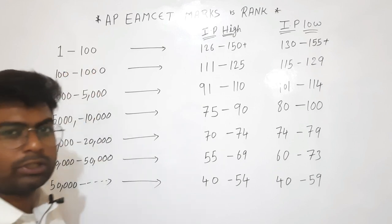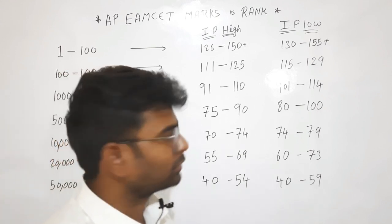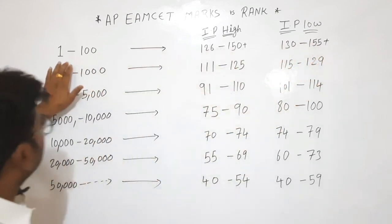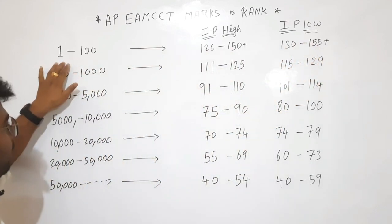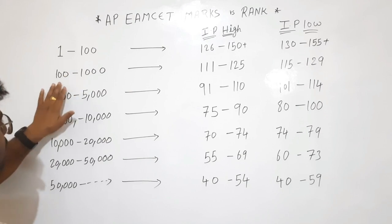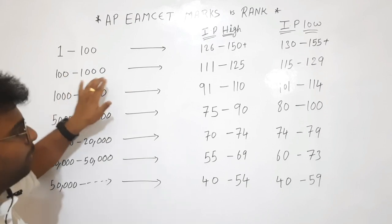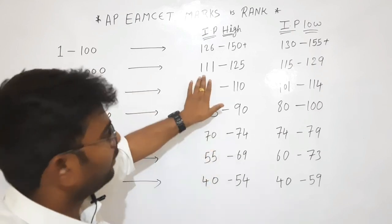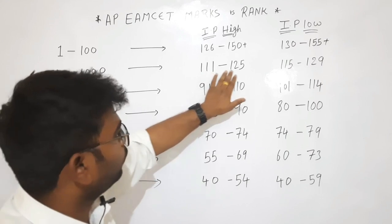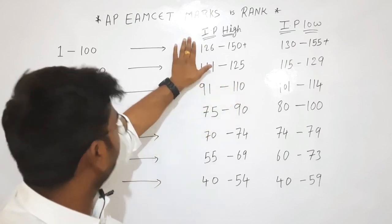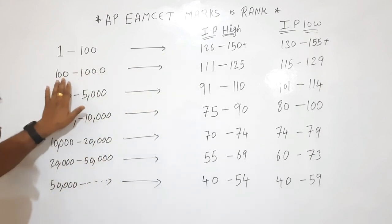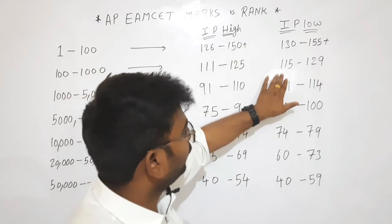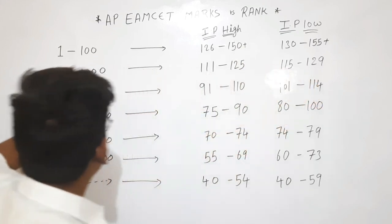If you have IP or intermediate marks of 130 to 155, then you have this rank range. If you have 100 to 1000 rank, you need a high percentage of IP and you have 111 to 121 marks between. If you have 100 to 155 marks, then you have 111 to 115 marks.